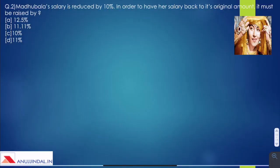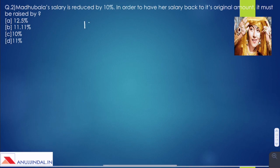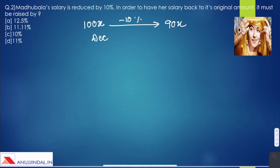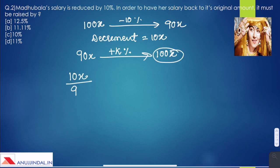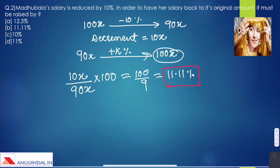Question 2: Madhubala's salary is reduced by 10%. In order to have her salary back to its original amount, by how much must it be raised? Let her initial salary be 100x. After a reduction of 10% it becomes 90x, so the decrement is 10x. We need to find by what percentage 90x should be raised to become 100x again. If her salary is increased by 11.11%, it becomes equal to her original salary. So the answer is 11.11%.